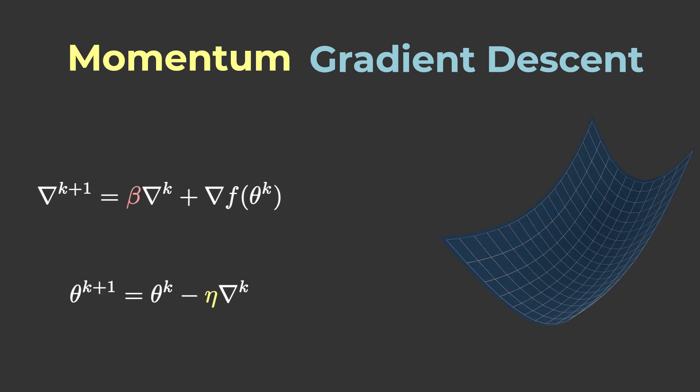Momentum gradient descent keeps track of previously computed gradients to build up momentum and accelerates convergence to the minimizer.